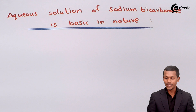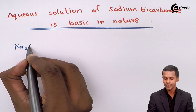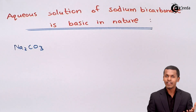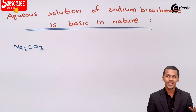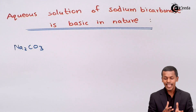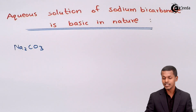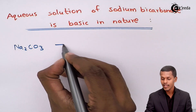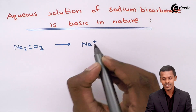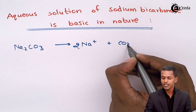Talking about sodium bicarbonate, we can write it as Na₂CO₃. This is a salt that has been derived from a strong base like NaOH and a weak acid like carbonic acid. Because Na₂CO₃ is a strong electrolyte, it will dissociate into 2 moles of Na⁺ along with CO₃²⁻.